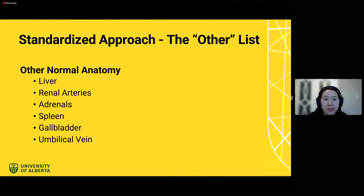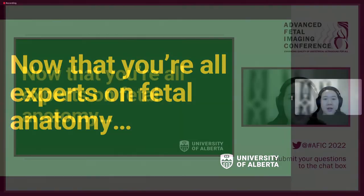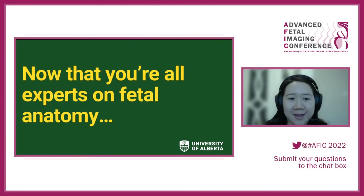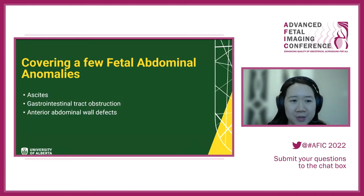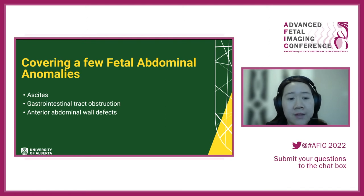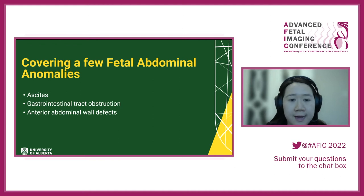Other structures to look at — not necessarily on the top list — include the liver, renal arteries, adrenals, spleen, gallbladder, and umbilical vein. Today I'll be covering fetal ascites, which requires timely evaluation given the wide differential, some types of gastrointestinal tract obstruction pathologies, and the anterior abdominal wall.